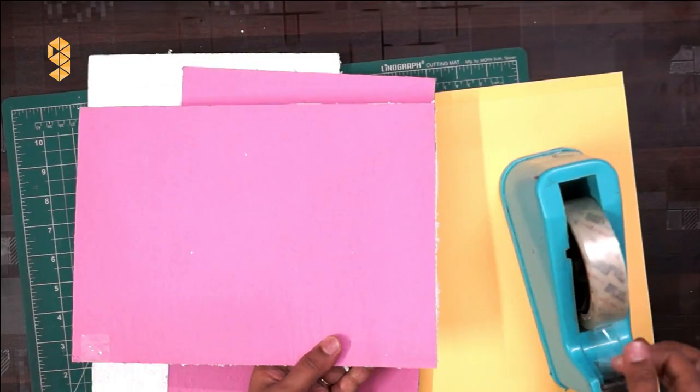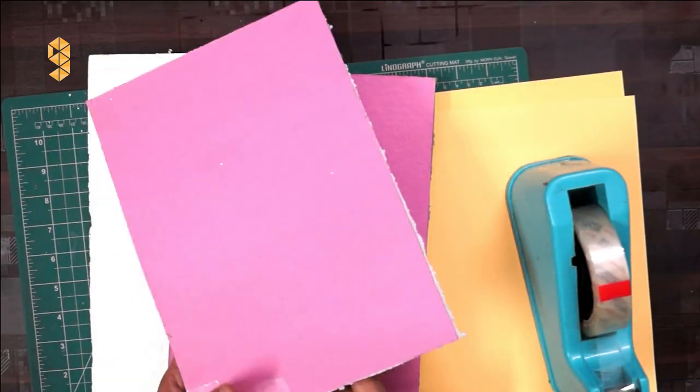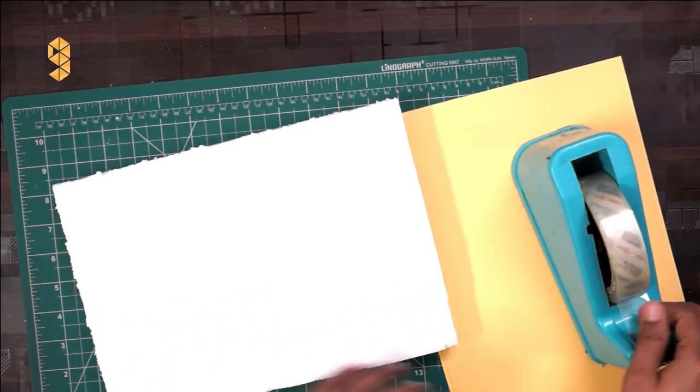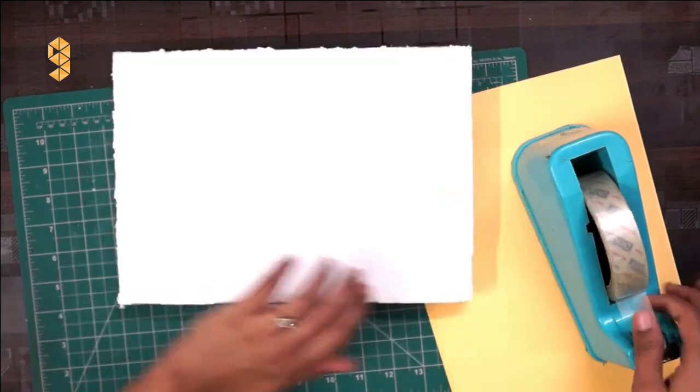Now take thermocol and waste cardboard. Cut them both to match the size of an A4 sheet and join them using cello tape from all sides as shown in the video. We need two such sets.